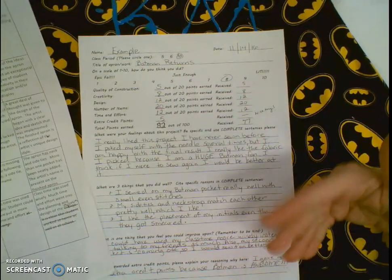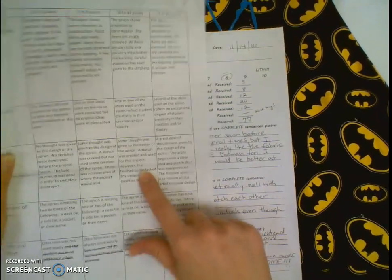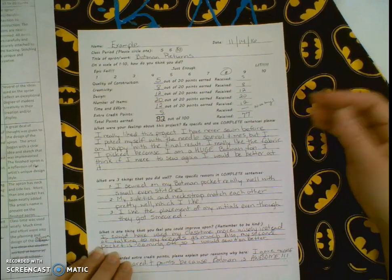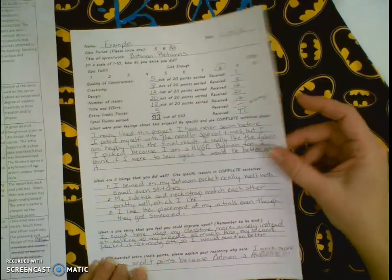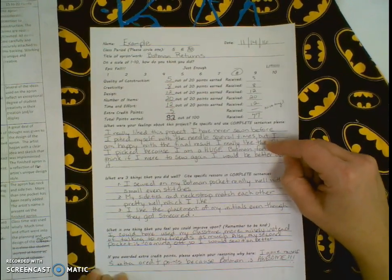The design they gave themselves a 12 which falls into the third category. Some thought was given to the design of the apron. The sketch was created which all of you were supposed to do before we started. However, the finished apron lacked any unique design qualities of the artist. So this doesn't tell me anything about the person who created the work.